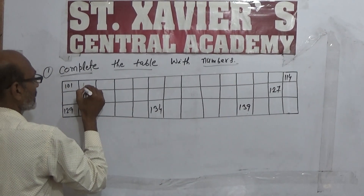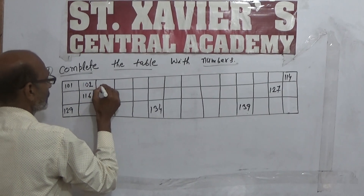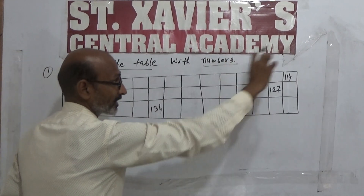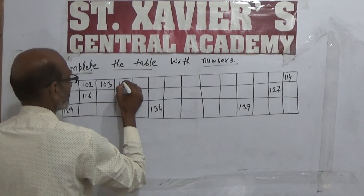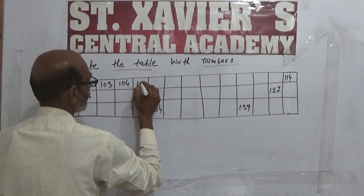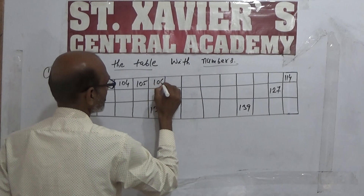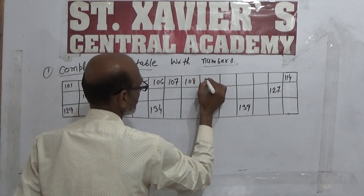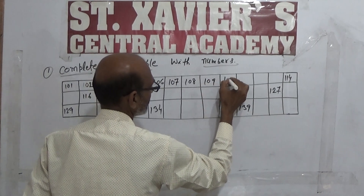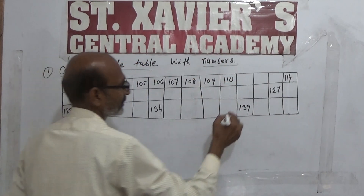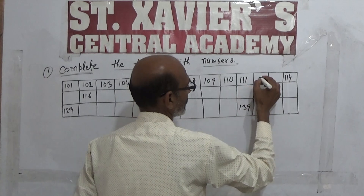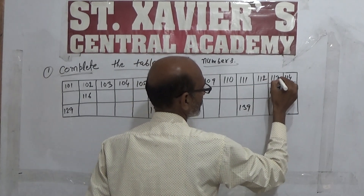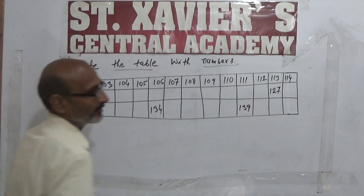तो 101 है तो क्या बढ़ेगा — 102, 103, 104, 105, 106, 107, 108, 109, 110, 111, 112, 113। यान दिया है 140।